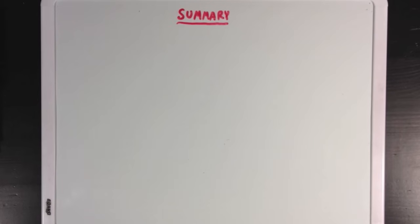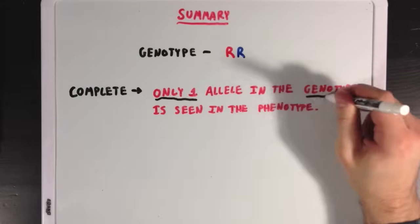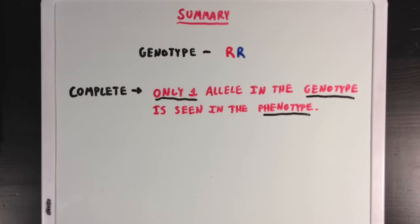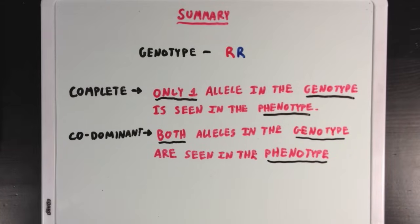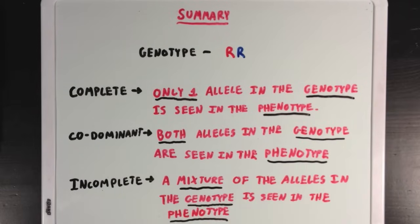So what did we learn? Assuming the heterozygous genotype — red R, blue R — there are three dominance patterns. In complete dominance, only the dominant allele is seen in the phenotype, as with the red flower. In codominance, both alleles are seen in the phenotype, as with the flower with both red and blue petals. And in incomplete dominance, a mixture of the alleles is seen in the phenotype, as with the purple flower.